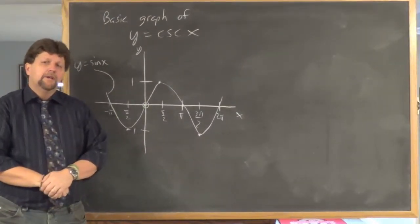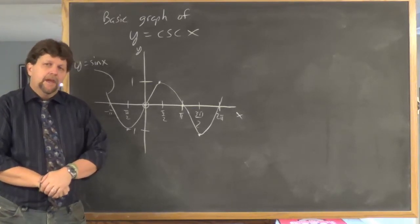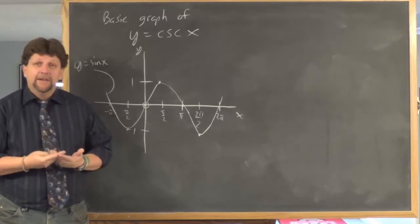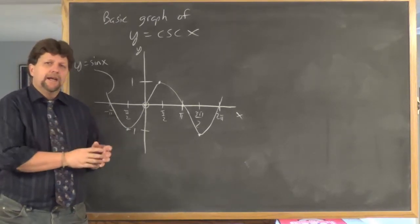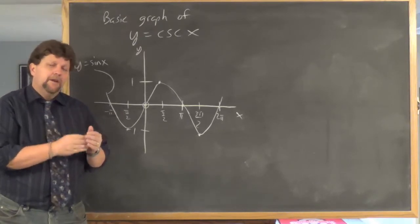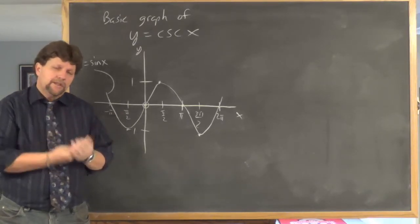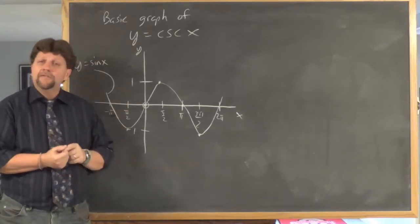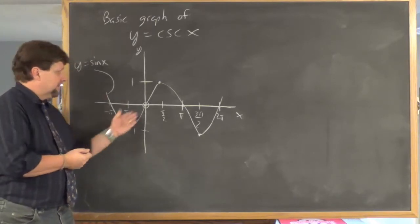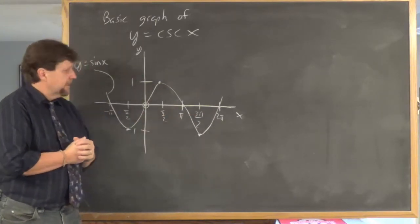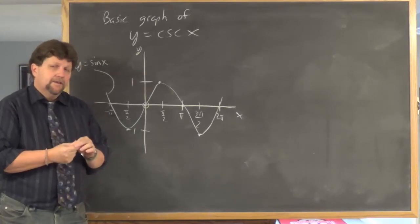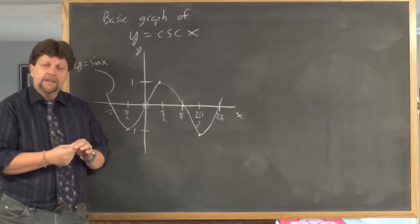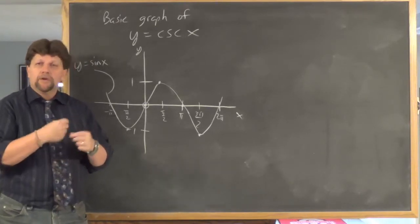Next up, let's look at the basic graph of cosecant x. When I think about graphing cosecant x, I immediately think of sine — because cosecant is the reciprocal of sine. What I've sketched here is the graph of sine x, the characteristic sine wave. If I know the graph of sine x, I can always get the basic graph of cosecant x because cosecant is the reciprocal of sine.